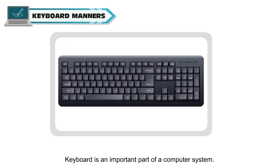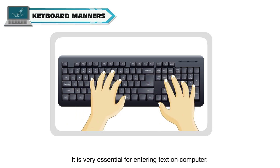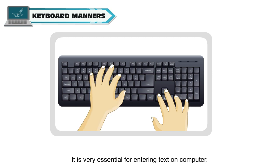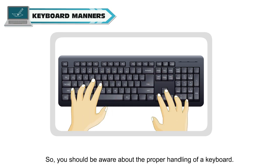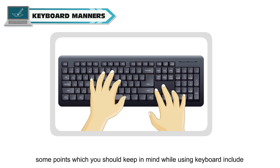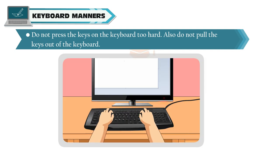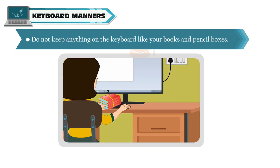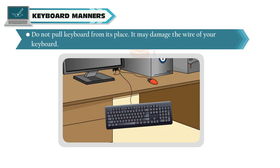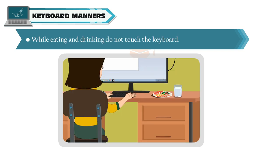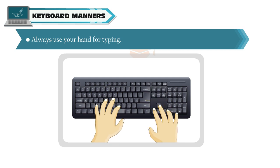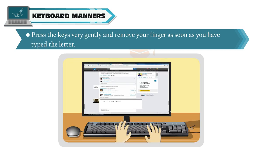A keyboard is an important part of a computer system and is very essential for entering text. Some points to keep in mind while using a keyboard: do not press the keys too hard, and do not pull the keys out. Do not keep anything on the keyboard like books or pencil boxes. Do not pull the keyboard from its place, as it may damage the wire. While eating and drinking, do not touch the keyboard. Always use your hand for typing and press the keys very gently, removing your finger as soon as you have typed the letter.